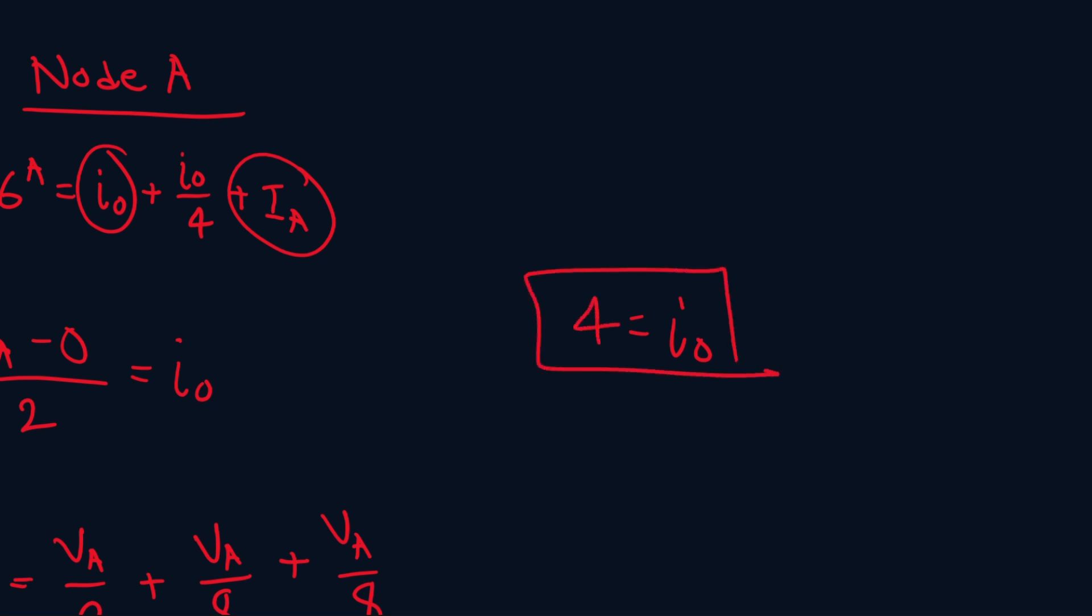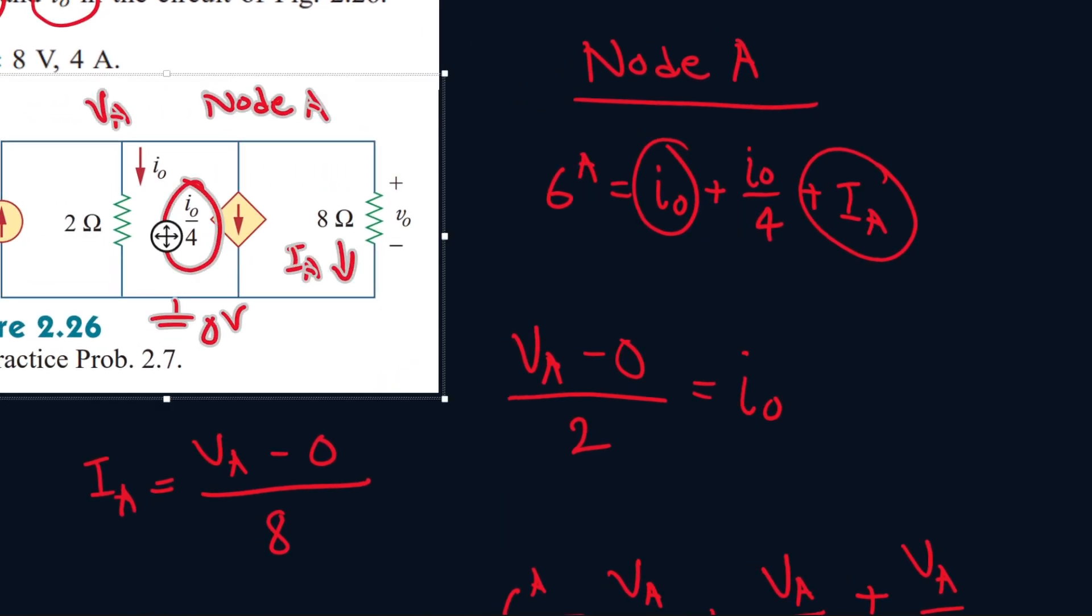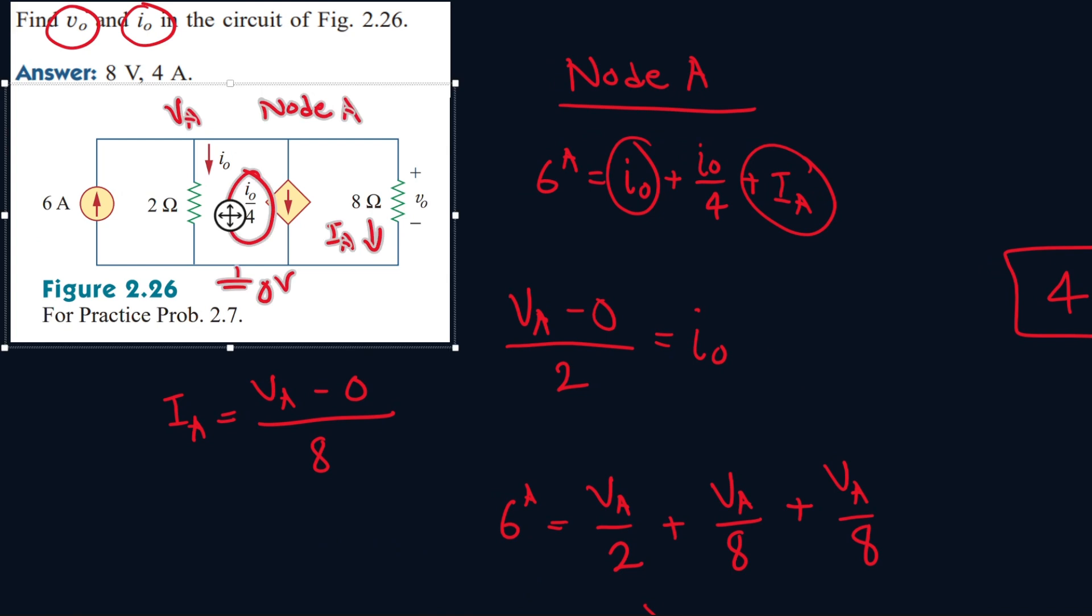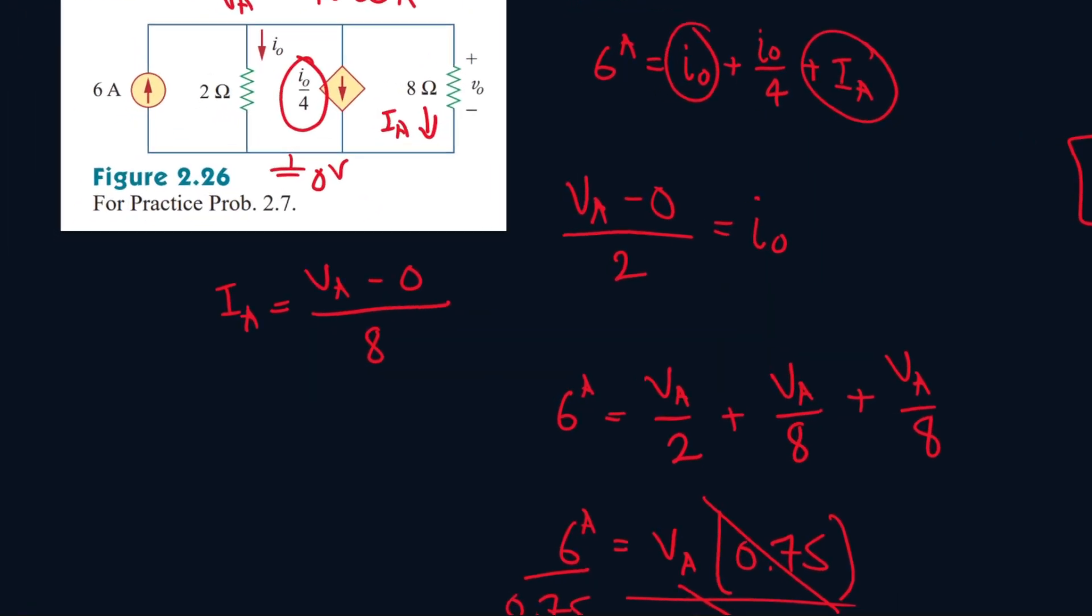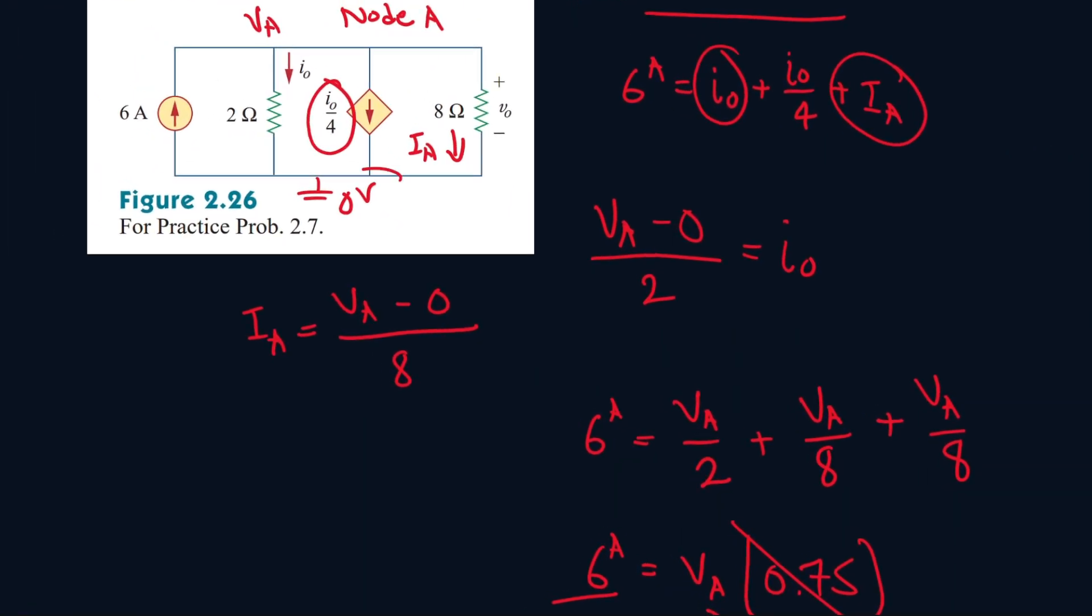Now we have to find V0. Well, we actually know what V0 is. Because since this whole region is VA, which is 8 volts, and since the ground node is 0 volts, there is a difference of 8 volts.